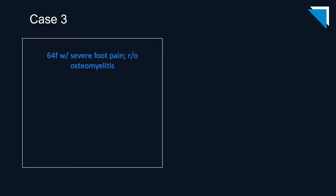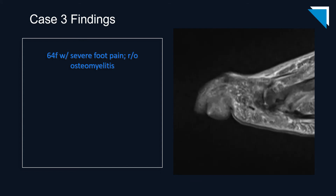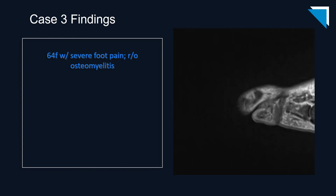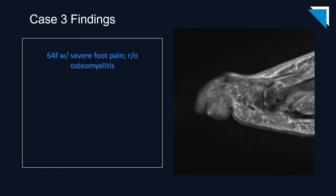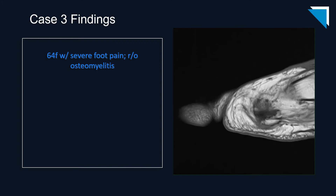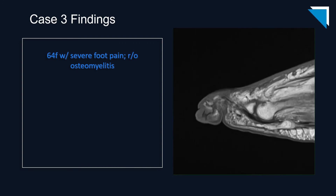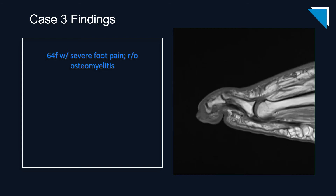Our third case is a 64-year-old woman with severe foot pain for rule-out osteomyelitis. We frequently do not receive localizing information from referring clinicians, so it's our job to suss out the area of interest based on our search pattern. I'll start with the sagittal fluid-sensitive sequence because the finding is most obvious here. As we scroll through, the area that stands out is the third distal phalanx, which demonstrates marked bone marrow edema and an adjacent soft tissue ulceration. Moving on to the sagittal T1-weighted sequence, we do in fact have associated T1 hypointensity and even some erosive or destructive change in the distal phalangeal head and shaft.